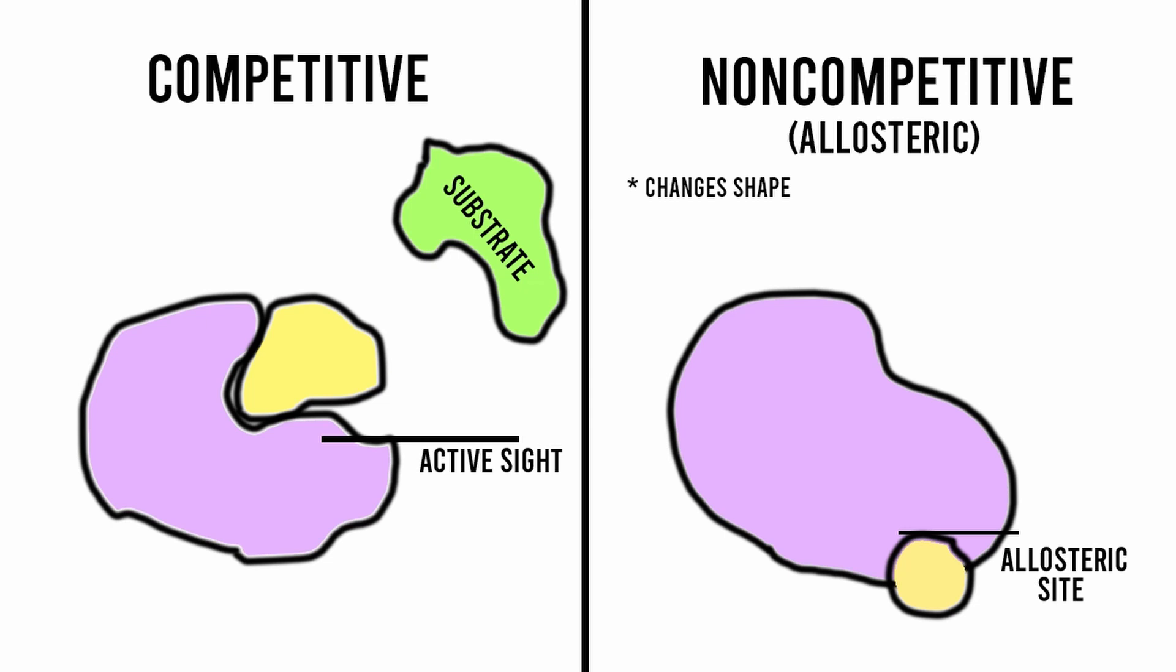Now, it's important to note that allosteric binding can both inhibit and amplify an enzyme's activity, depending primarily on how the enzyme's protein's shape is altered.